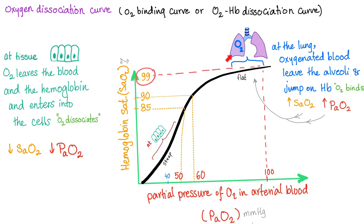At the lungs, oxygen is jumping into the blood and onto the hemoglobin — the hemoglobin is being loaded with oxygen. The customers are entering the Uber: loading, which means binding, which means high affinity between oxygen and hemoglobin. At the tissue, oxygen is dropped off — that's unloading, unbinding, dissociation, and decreased affinity between hemoglobin and oxygen.